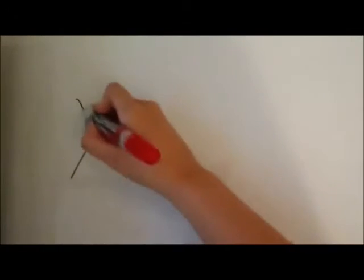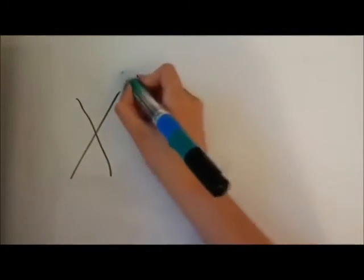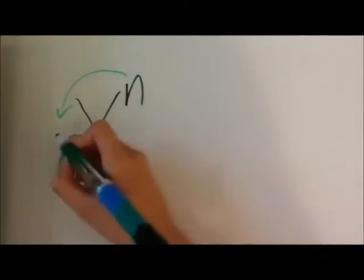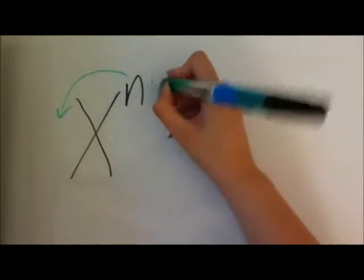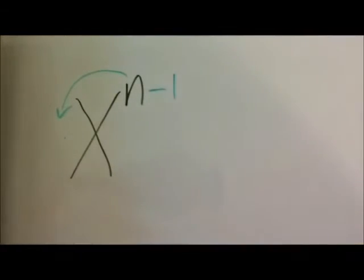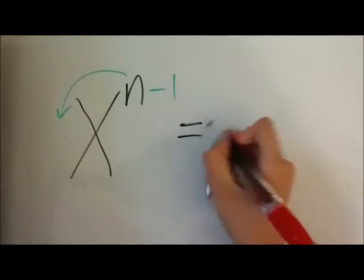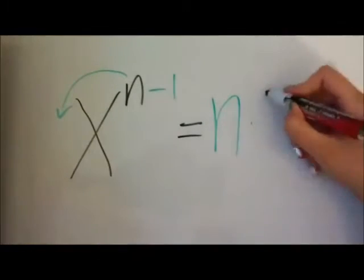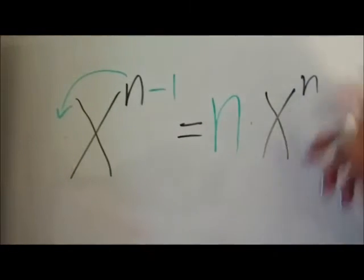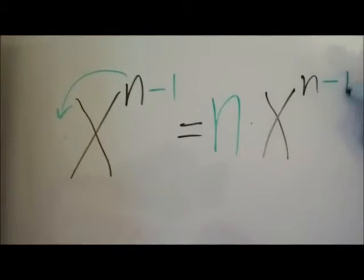Okay, so let me break this up. So you have x to the n, and what you're going to do is you're going to bring n to the front, so you would multiply n by x, and then after you do that you just subtract n by 1. So the outcome is n times x to the power of n minus 1.